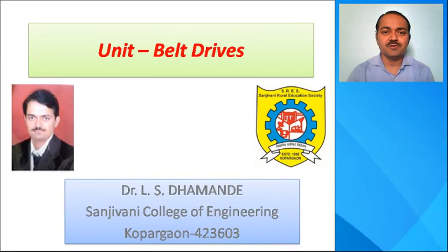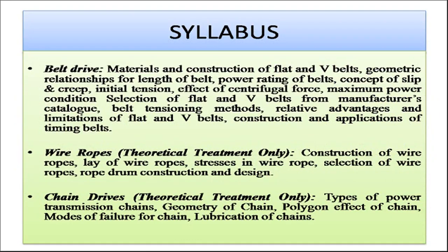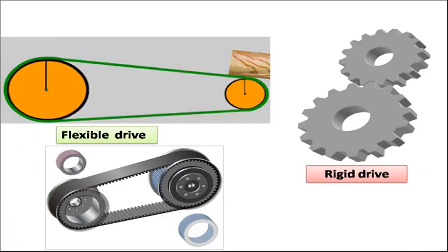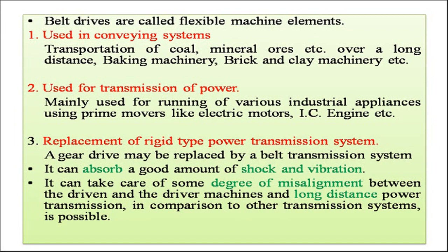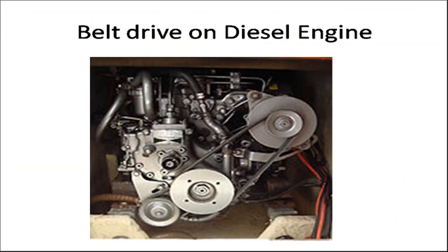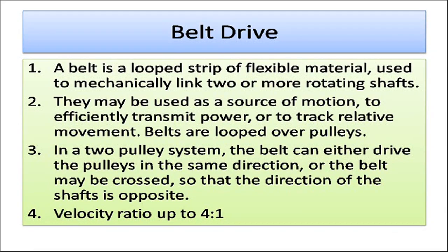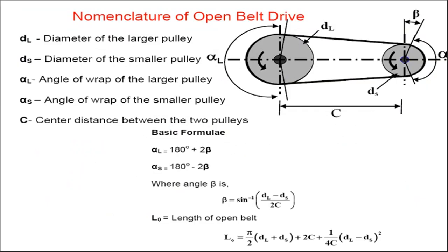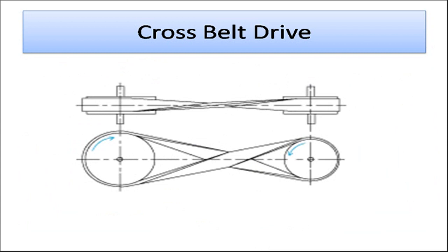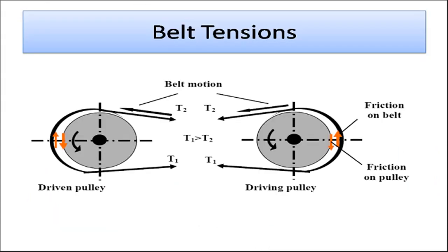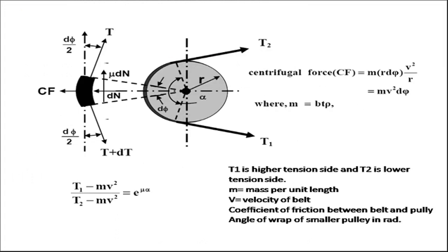Hello and welcome back. We are looking into belt drives. Up till now we have seen the content for the belt drive, starting with the flexible and rigid drive, then the application of the belt drive, the advantages and disadvantages, some basic cross sections, the open belt drive with its length of belt and angle of wrap, the cross belt drive with its length of belt and angle of wrap, and the importance of belt tensions.